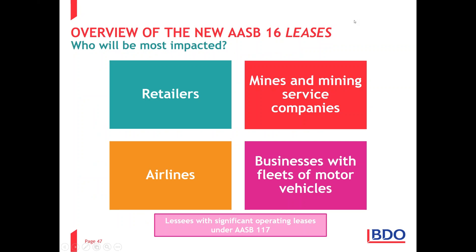Who will be most impacted? Retailers — some have hundreds of operating leases and will need amortization tables for each one. Mines and mining service companies, airlines — to keep Sir David Tweedie happy — and businesses with fleets of motor vehicles. Essentially, any entity that is a lessee with significant operating leases under the current AASB 117 will be impacted.